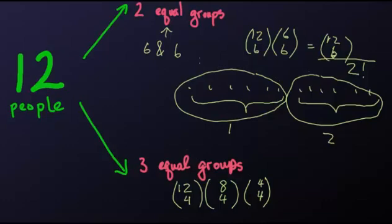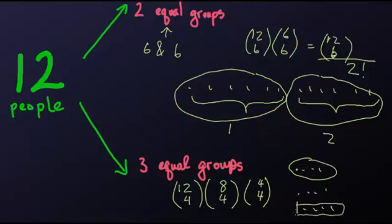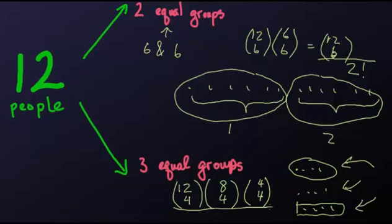But similar to how we had a factorial when doing two equal groups, we're also going to have a factorial here. Why? Because in our twelve people, the C(12,4) might choose one set of four, C(8,4) another four, and C(4,4) the last four. But if C(12,4) started with a different group of four, we could still end up with the exact same three equal groups chosen in a different order. That's why we divide by the total number of ways we can arrange three groups, which is three factorial. Thank you for watching.